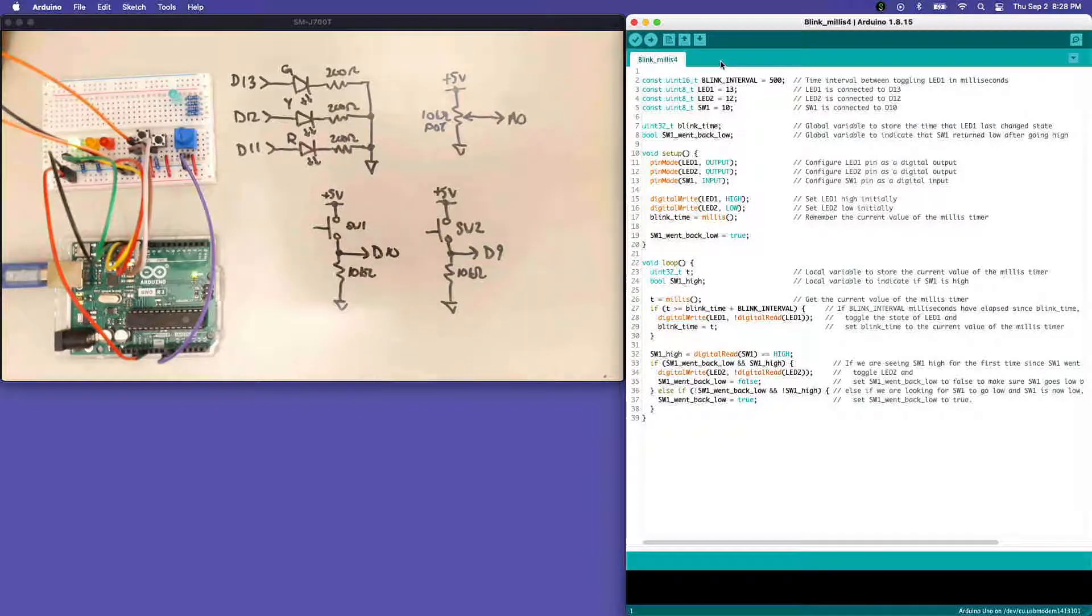We're going to implement some logic here in our sketch. This will look fairly similar to our blink millies three sketch in terms of the setup and variables and things like that. But we're introducing here also a Boolean.